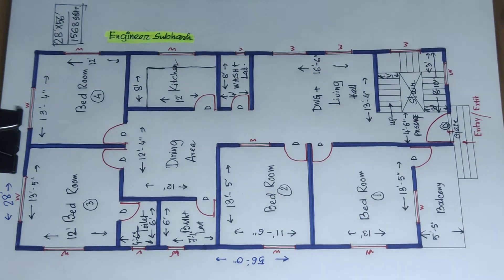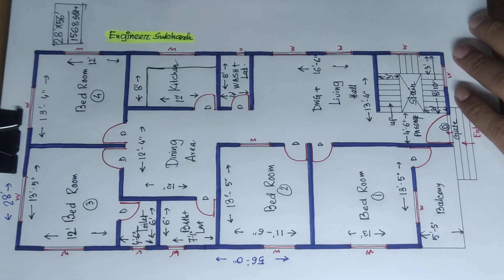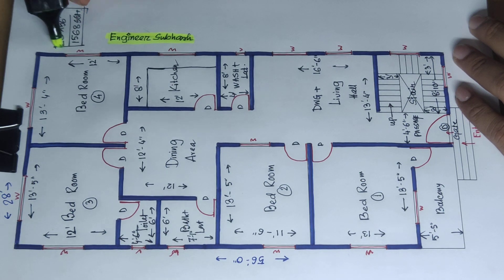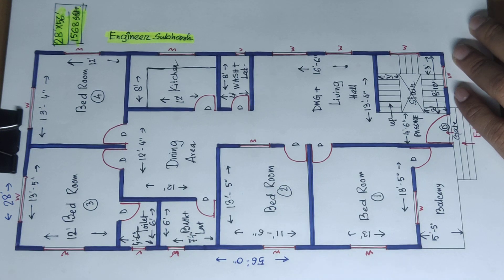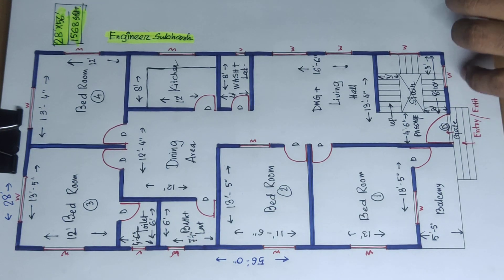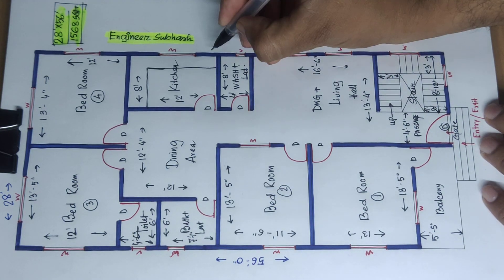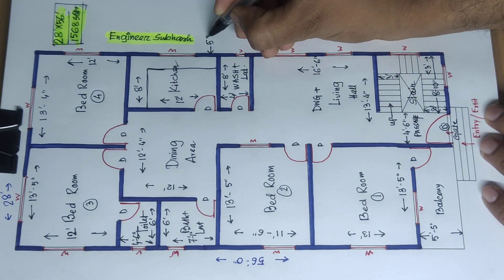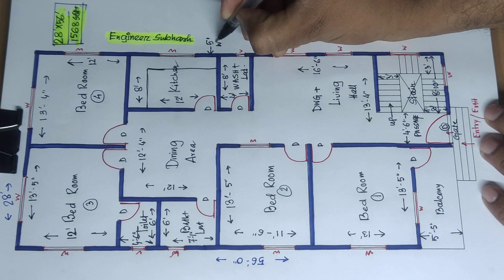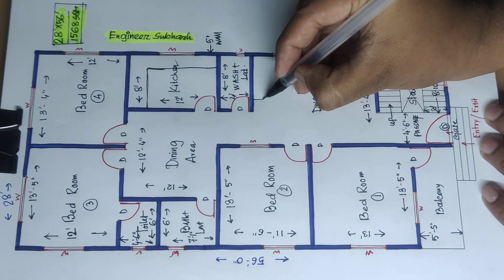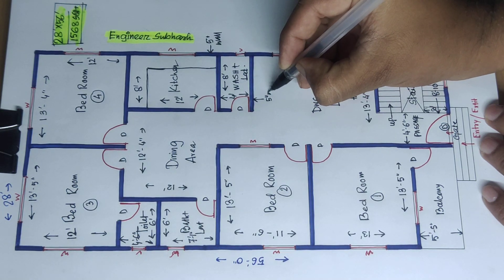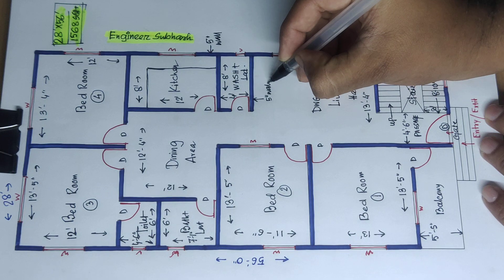Okay, we will highlight the plan. Okay, next — outside wall: 5 inch wall; inside wall: 5 inch wall. Okay.